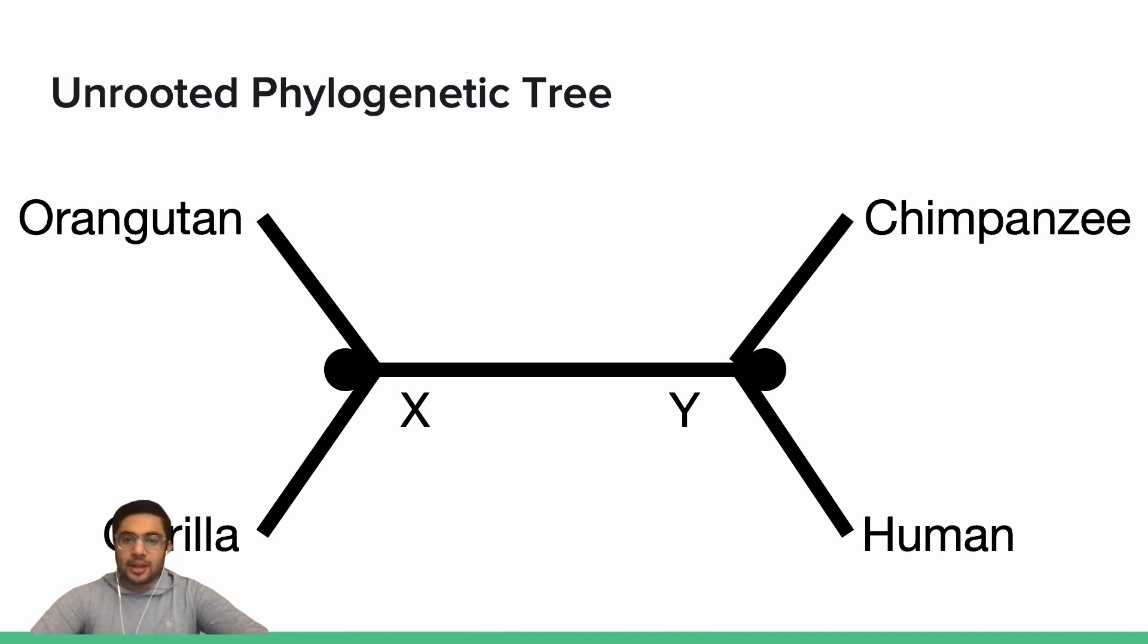In theory, all phylogenies should be rooted trees. But in practice, modern techniques that attempt to infer the evolutionary history of multiple molecular sequences are typically only able to infer unrooted phylogenies. For example, we can represent the evolutionary history between orangutan, gorilla, chimpanzee, and human using this unrooted phylogeny.